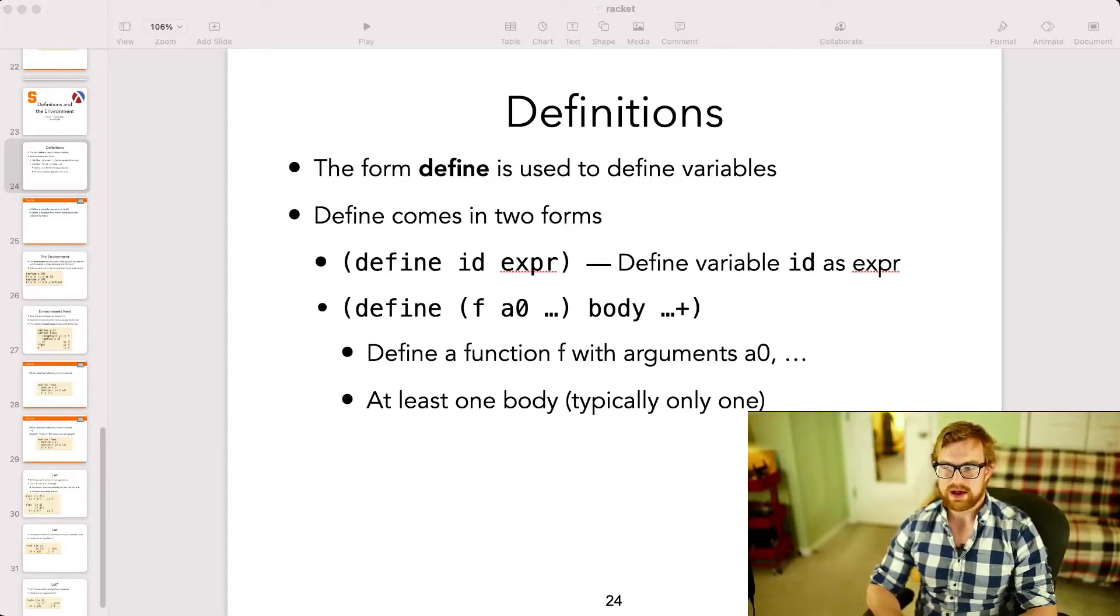Although Racket allows multiple bodies for function definitions, often we use just one. And the return or the evaluation of the last body will be the evaluation of the entire function. This supports functions being able to have side effects, which is something that we're not really going to talk too much about in the early parts of the course, but it'll become apparent later on.